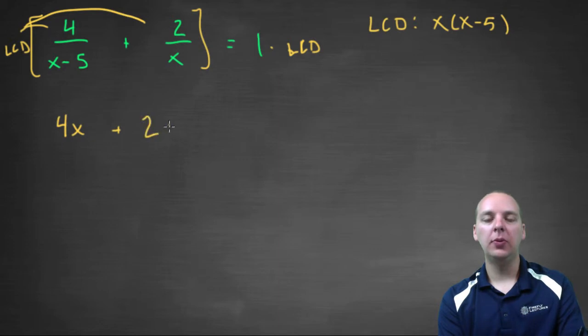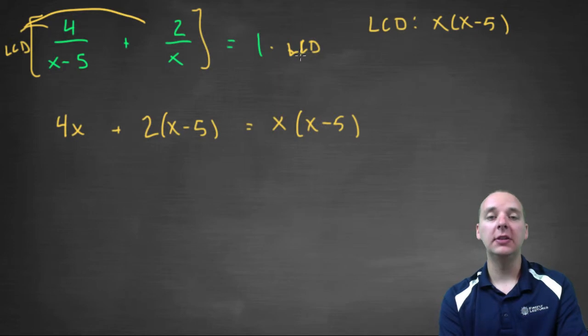The second term the X's cancel, and you would have a two times the X minus five, this also being distributed, equals X times X minus five, that's the LCD, times one. So we'll just write those two guys here. So great, now we have an equation that doesn't have fractions.